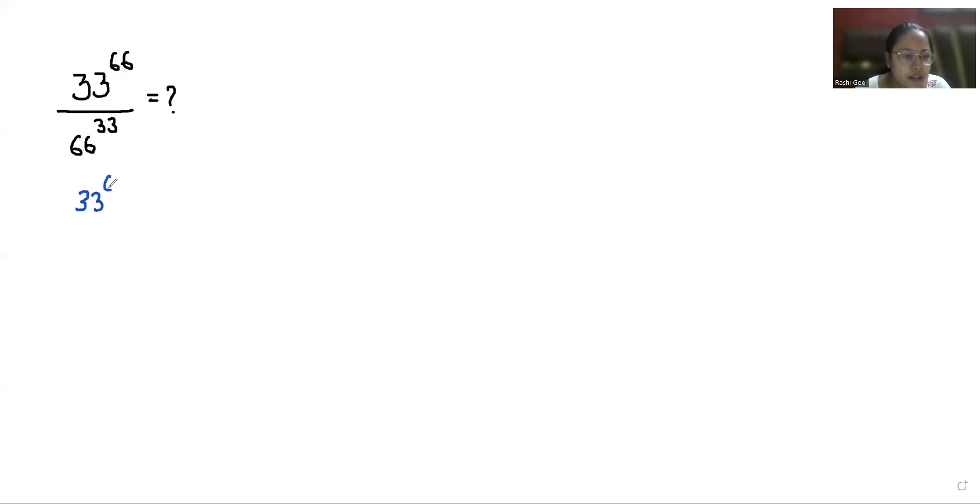33 power 66 by 66 we can write it as 2 times 33 whole power 33. Now exponent rule: x times y whole power m we can write it as x power m times y power m.